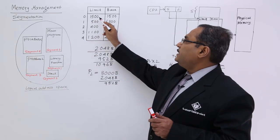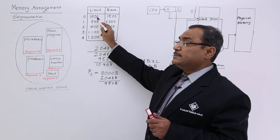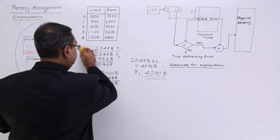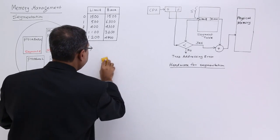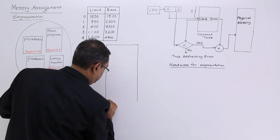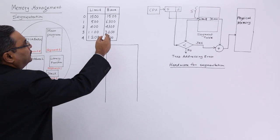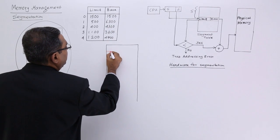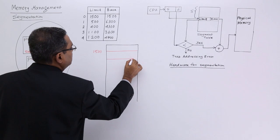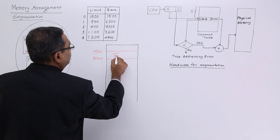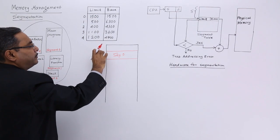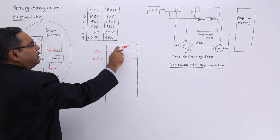For each segment, the limit and the base address are mentioned. The limit is the segment size, and the base address is where it has to be loaded in the computer's memory. Looking at the memory map, the minimum address is 1500, so the base will be 1500 and the limit will also be 1500. That means up to address 3000, segment number 0 will get loaded. Base address is 1500 and limit (size) is 1500, so from 1500 to 3000, segment number 0 will be there in main memory.